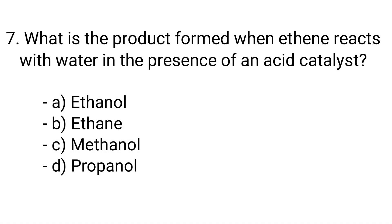Question number 7. What is the product formed when ethene reacts with water in the presence of an acid catalyst? Option A: Ethanol, B: Ethane, C: Methanol, D: Propanol. The correct answer is option A, Ethanol.